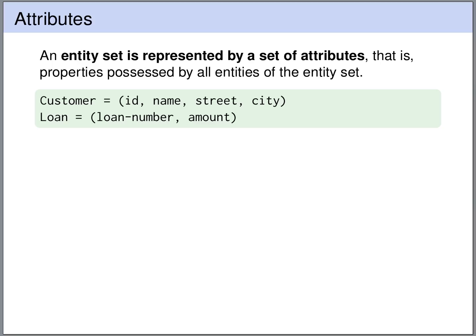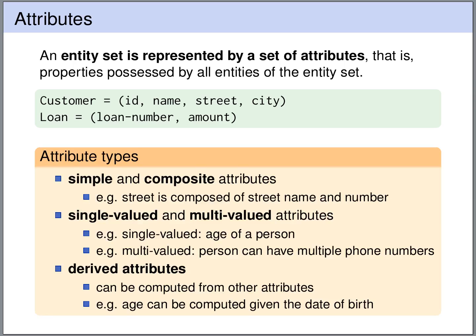An entity set is represented by a set of attributes that are shared among the entities in that entity set. For instance, every customer entity in the customer entity set has an attribute id, name, street, and city. Every loan has a loan number and an amount. We can have different attribute types, as we will see in the next slide.